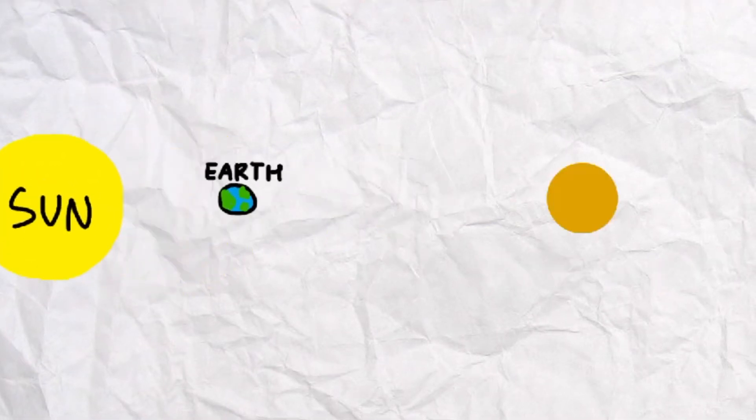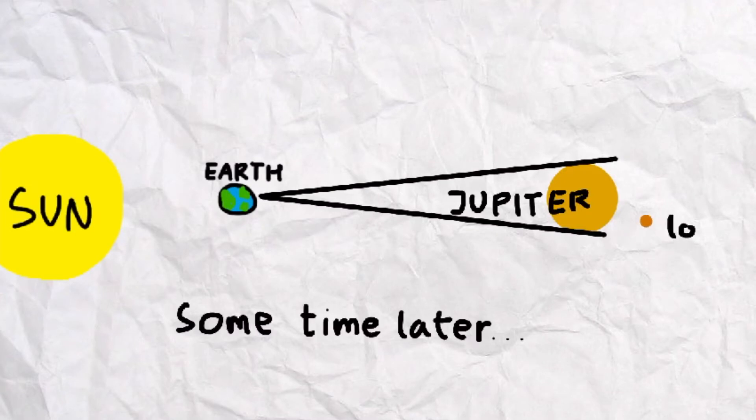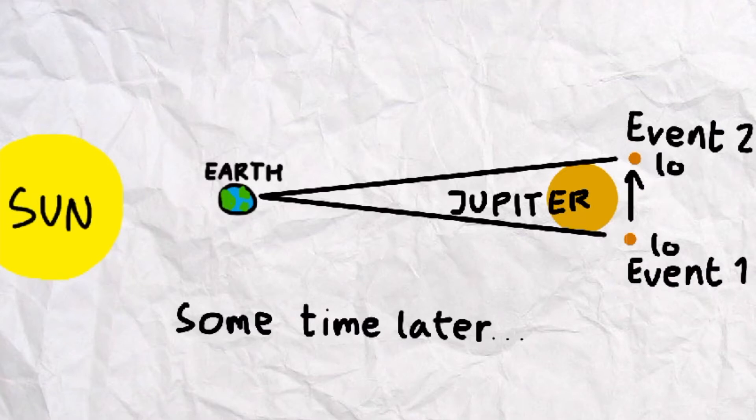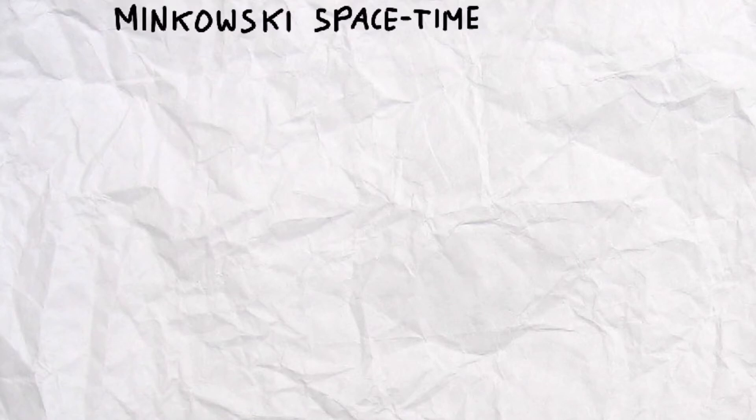Rømer observed Jupiter's moon Io as it traversed between two points, where it leaves the view and where it appears again. The time interval between these two points allowed him to calculate the value of c. Now, before we go into the real observations of Rømer, we first need to understand an essential graphical part of relativity: Minkowski's space-time diagrams.